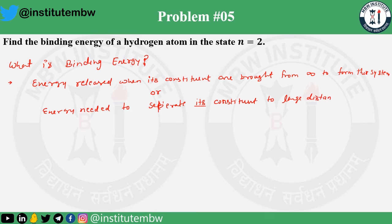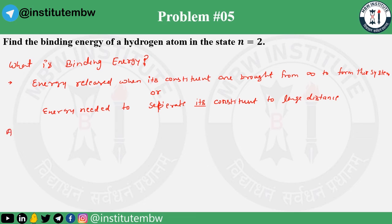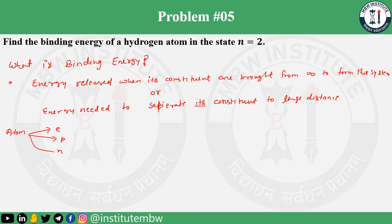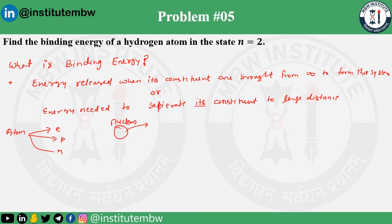If you know this definition, then you can obviously solve the question. If I say you have an atom, then what are the constituents of the atom? That is electron, proton, and neutron. And if you have a nucleus, then the constituents of the nucleus are neutron and proton.